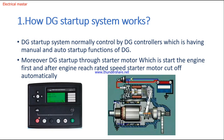The DG starts through a starter motor, which cranks the engine first. After the engine reaches rated speed, the starter motor cuts off automatically. With the help of the starter motor, once the generator engine reaches the rated speed of 1500 RPM, the starter motor cuts off automatically.